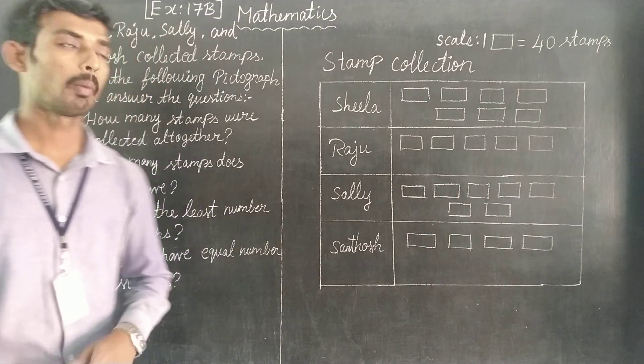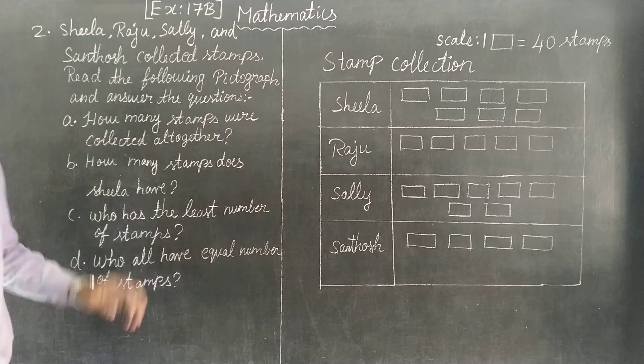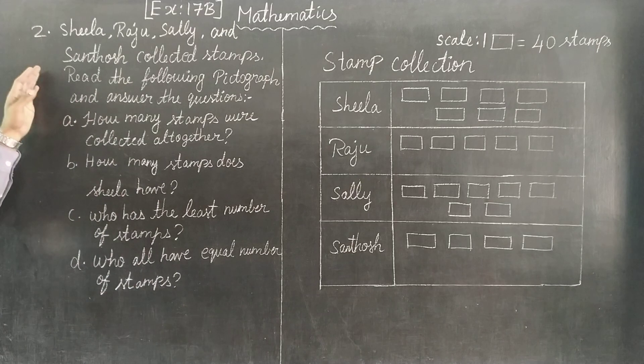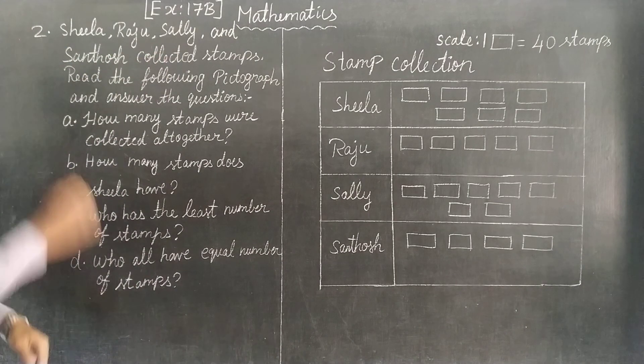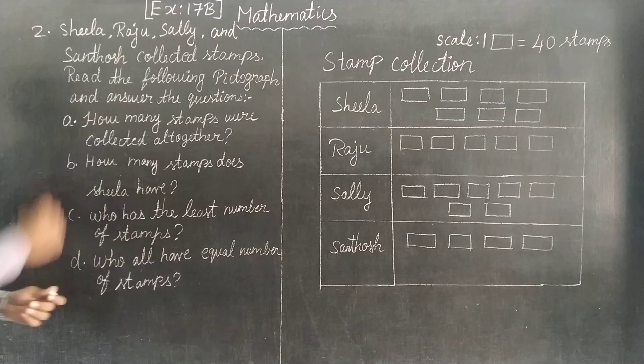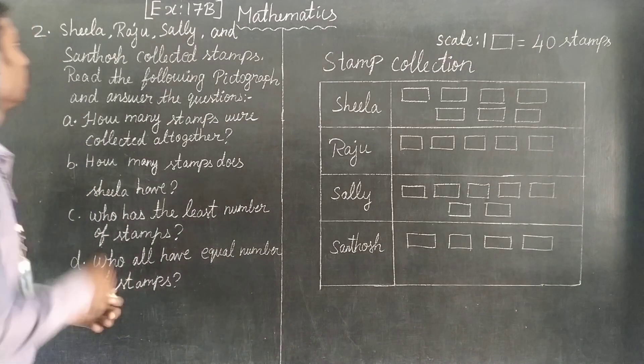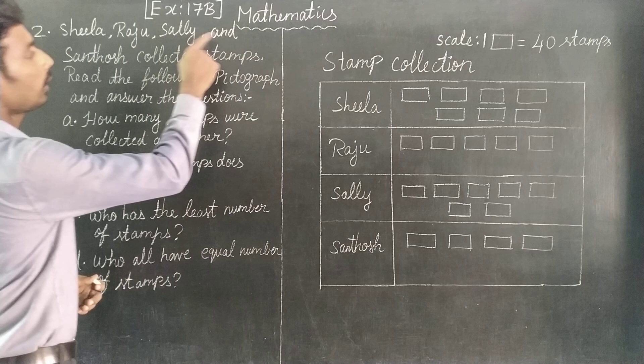Dear students, now we will talk about exercise 17, second section of course. Sheela, Raju, Sally and Sandosh collected stamps. So this is four members stamp collection.